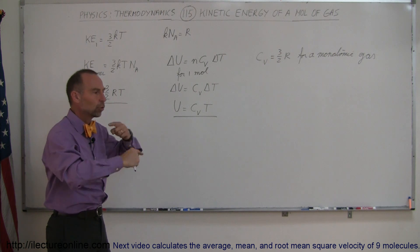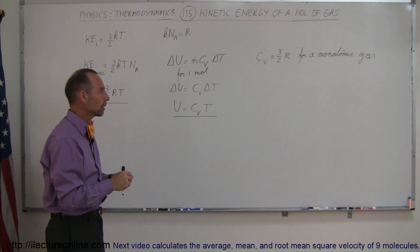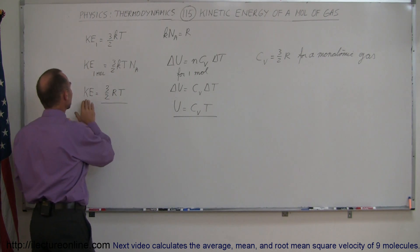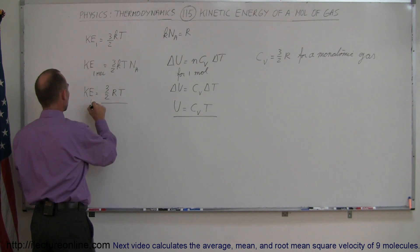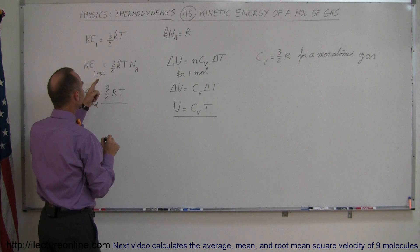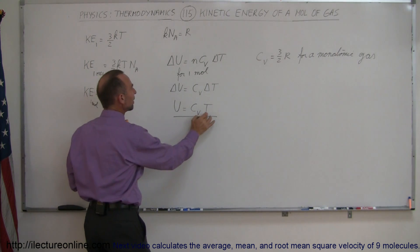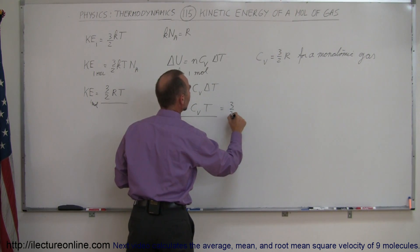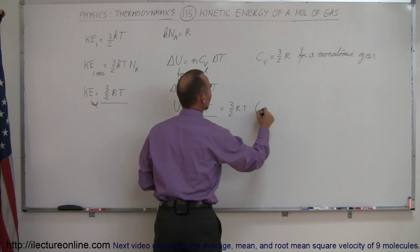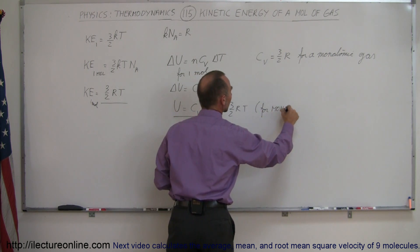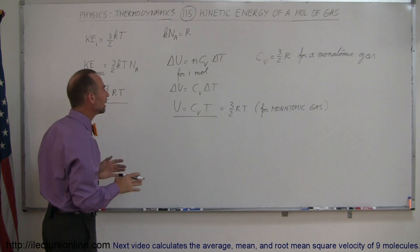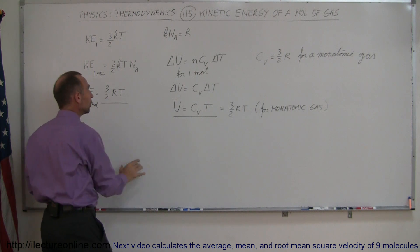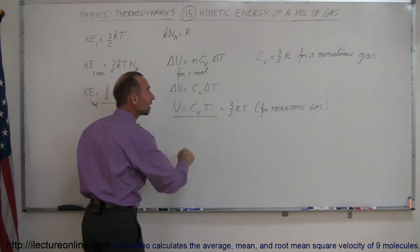A monatomic gas cannot get any energy from rotational motion like a diatomic or triatomic molecule can. So if we only consider the translational motion of a gas, the kinetic energy for one mole is equal to 3 over 2 RT, which is the same as C sub V T for a monatomic gas, also equal to 3 over 2 RT. The kinetic energy of a molar gas equals the internal energy due to translational motion only.